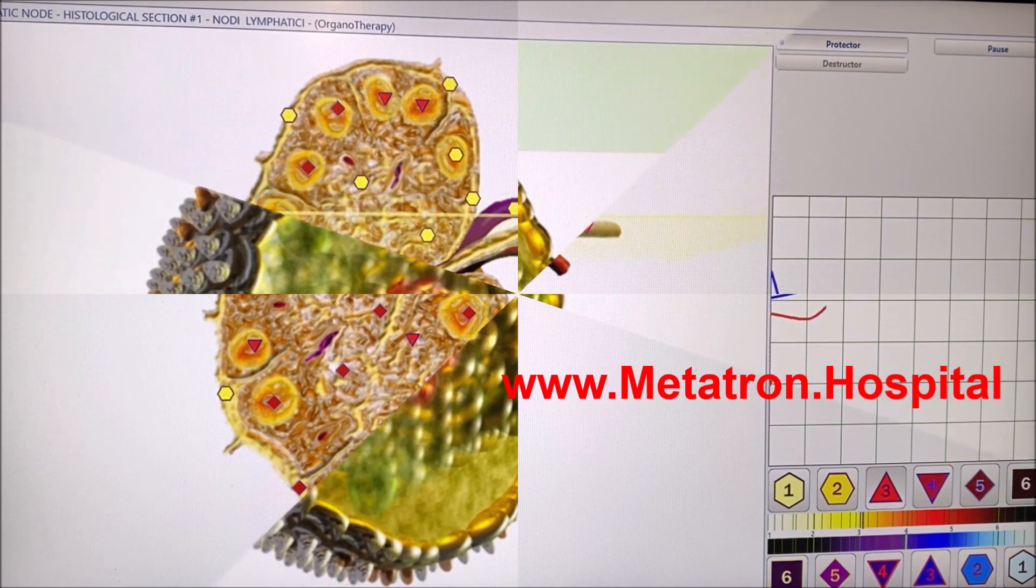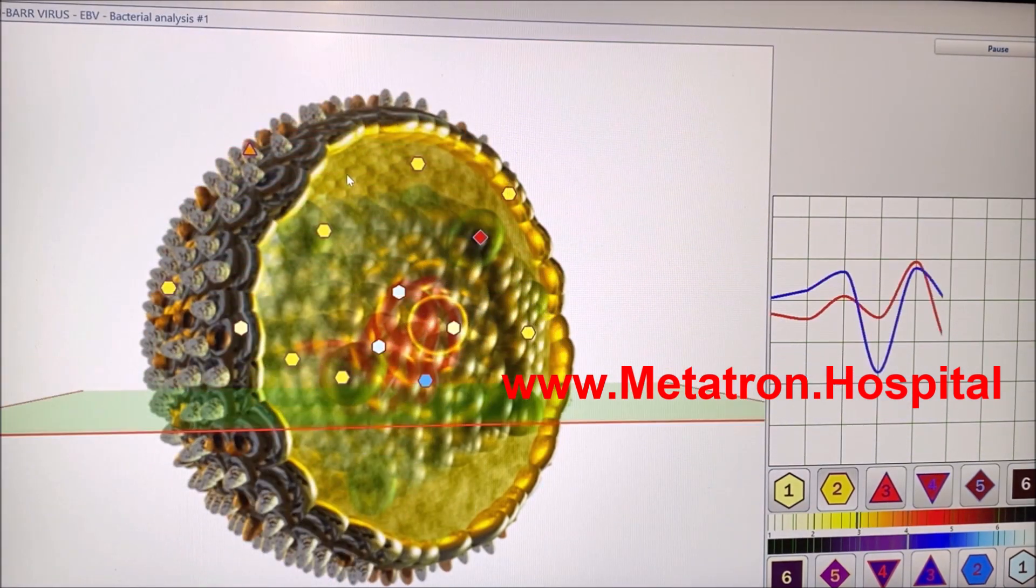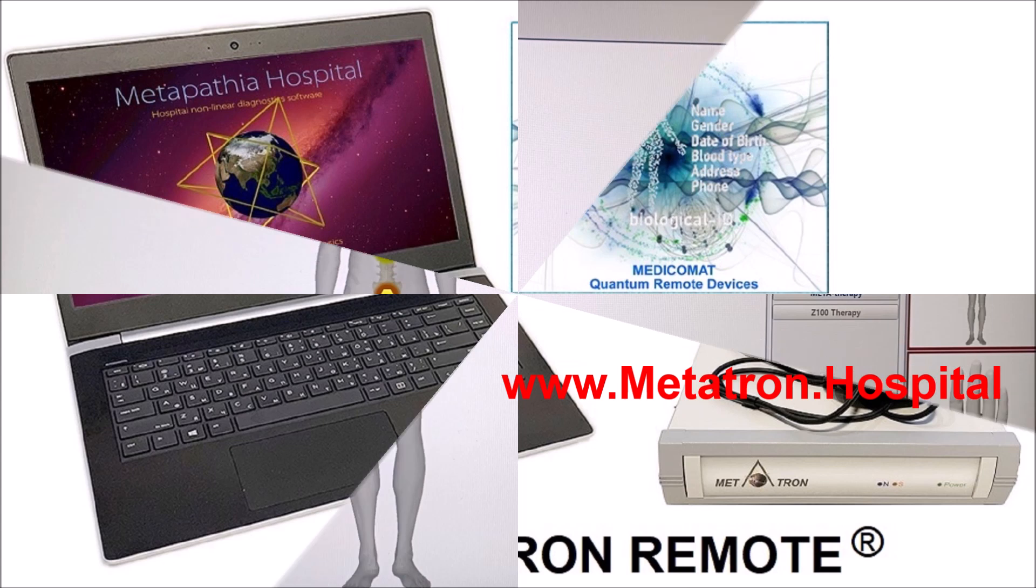Required information that determines your quantum ID are: Name, Gender, Date of birth, Blood type, Address, Phone.